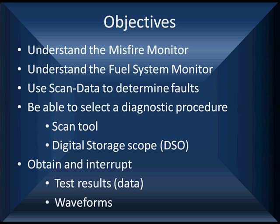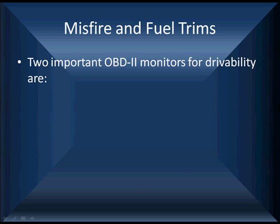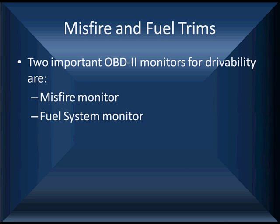Every time you look at a piece of data, it should tell you that you've either eliminated something and found it good, or identified something that's bad, or at least you have a direction of where to go next. Stop and ask yourself: does this indicate that I should go and look at something additional? We'll show you examples when we do some of our testing of how we do that. Misfire and fuel trims — I have two important monitors we're going to talk about: the misfire monitor and the fuel control monitor.